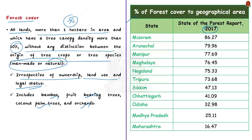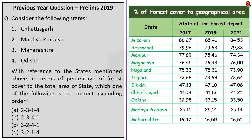Based on the 2017 report data for percentage of forest cover to geographical area, the northeastern states are at the top. For example, Mizoram has a forest cover of 86%, meaning 86% of its geographical area has forest cover. Similarly, Arunachal, Manipur, Meghalaya, Nagaland, etc. are at the top. Now the question gives four states: Chhattisgarh, Madhya Pradesh, Maharashtra and Odisha with their respective percentages of forest cover to total geographical area. From this list, the least is in Maharashtra and the most is in Chhattisgarh.